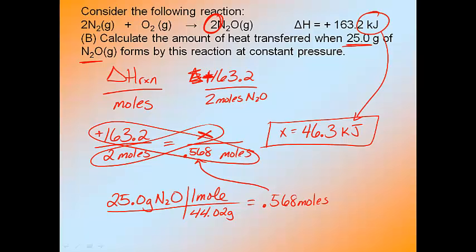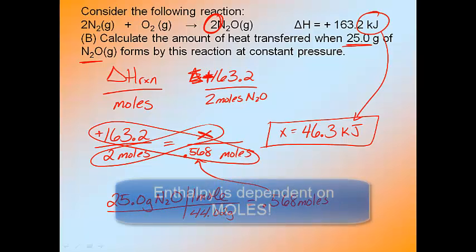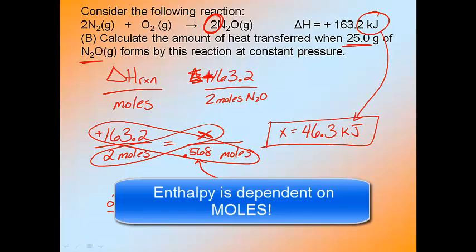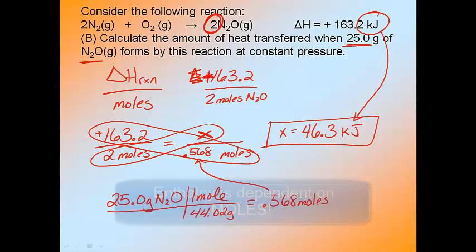So X is equal to 46.3 kilojoules. Now, how do I know it's kilojoules? Simple. I just look up here. And whatever unit is up there is the unit that goes down there. I don't have to think about it at all. I literally just look at the problem and do it. So notice that. And make sure you mark this down next to this problem. Enthalpies are based on moles. You must know moles in order to find enthalpies. Keep that in mind. Very important all the way through this whole unit about the moles and enthalpy.